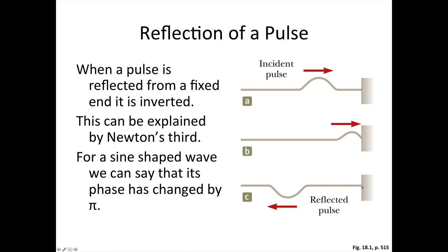As a result, when the pulse is reflected backwards, it's reflected back underneath the string like this. So when it's reflected back underneath, we say that it undergoes a phase change of pi radians, or 180 degrees. That's what happens when we have a pulse reflected off a fixed end.